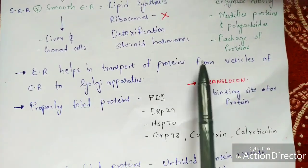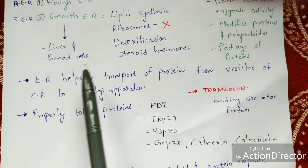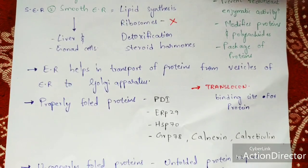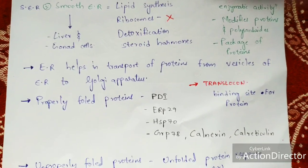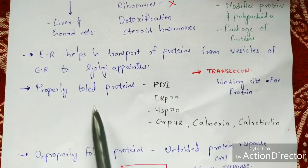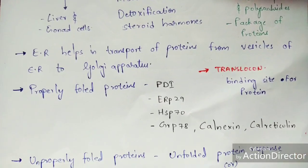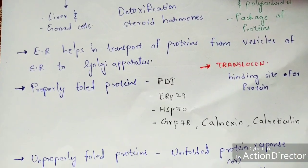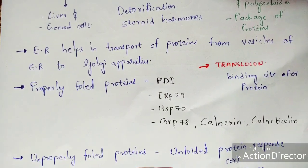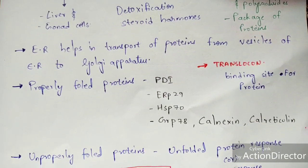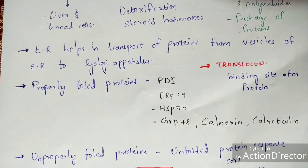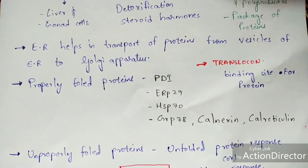The proteins transported from the endoplasmic reticulum to the Golgi apparatus are of two types: properly folded proteins and improperly folded proteins. The properly folded proteins include PDI, ERP29, HSP70, GRP78, calnexin, and calreticulin, which get transported from the vesicles of the endoplasmic reticulum to the Golgi apparatus.